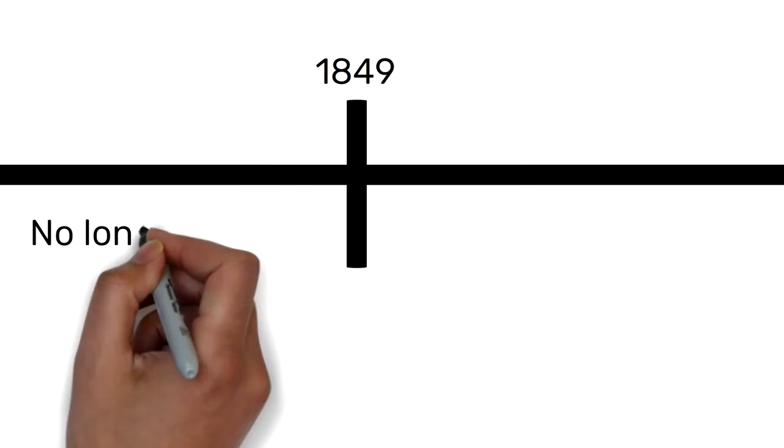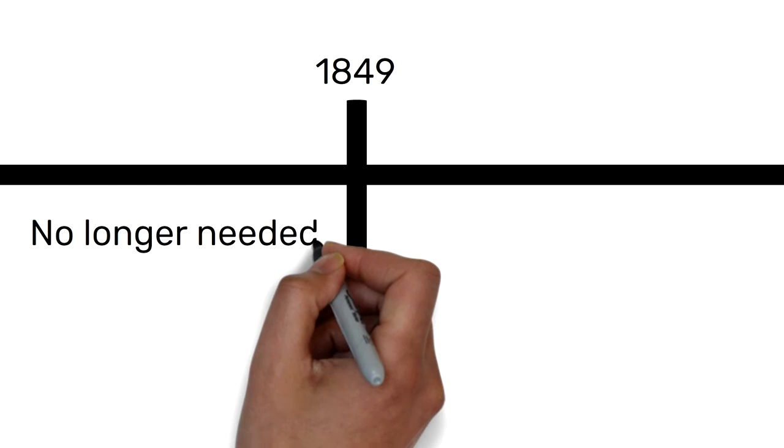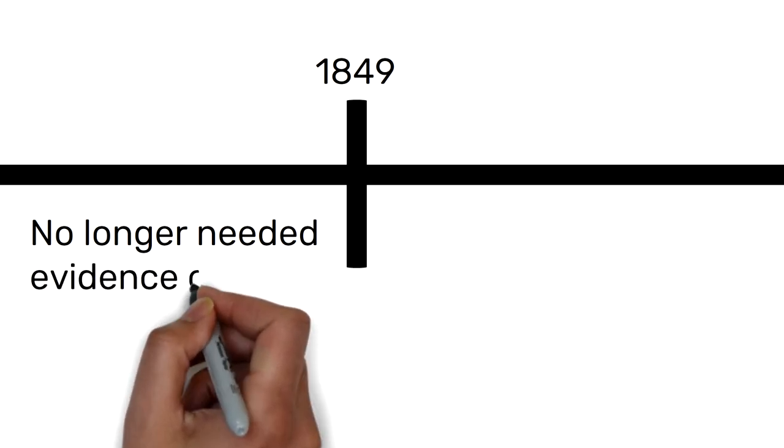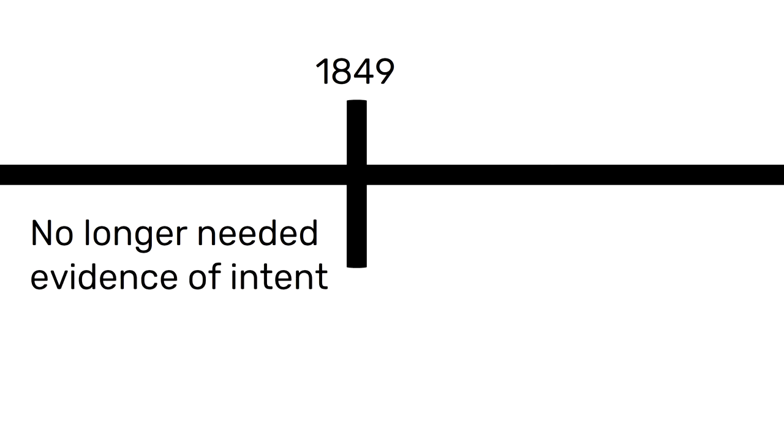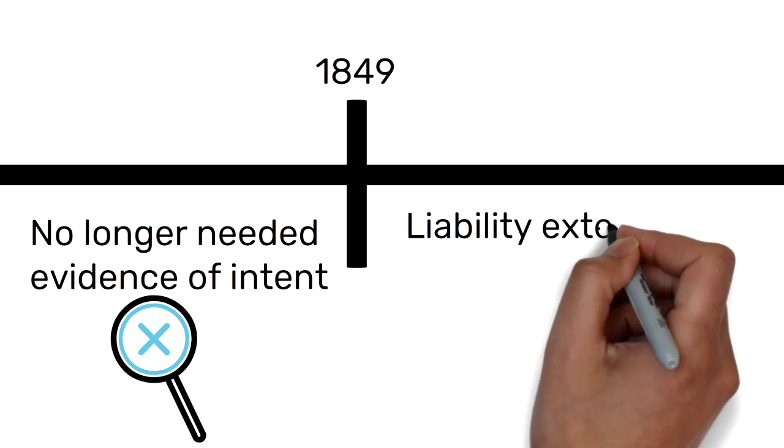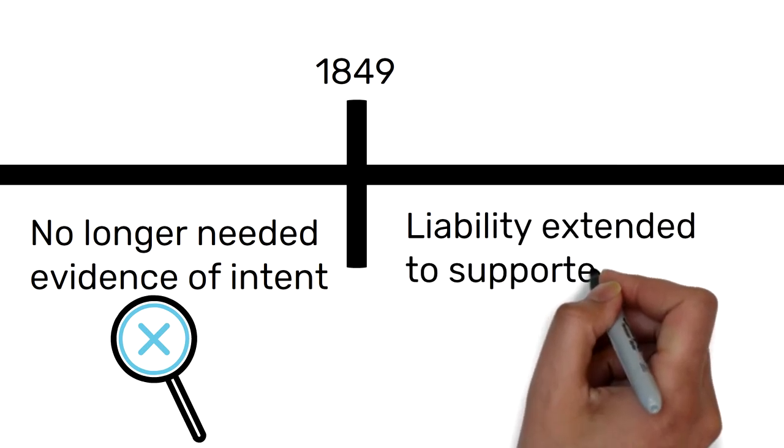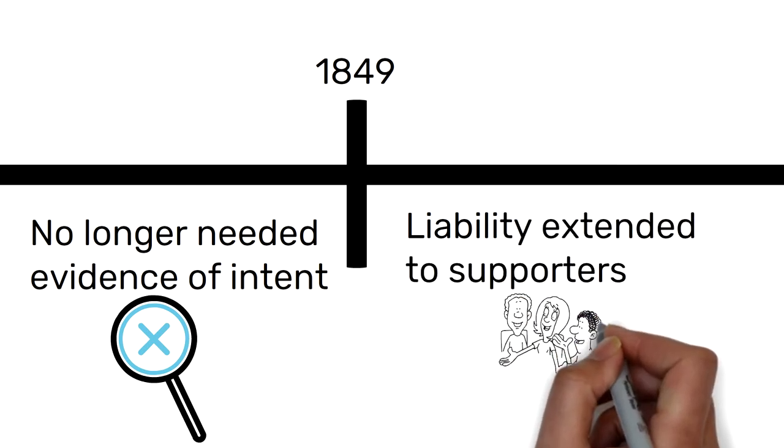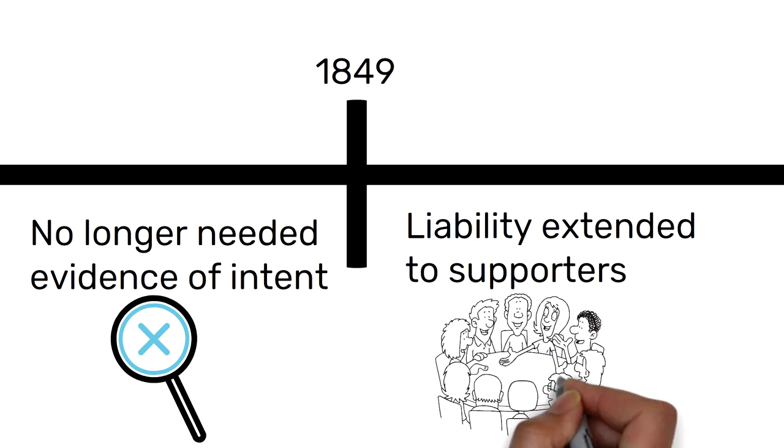In 1849, there were two more criteria to cover any loopholes that existed in previous laws. Firstly, there no longer needed to be established that the defendant had acted cruelly. They did not need evidence of intention in order to prosecute. Secondly, liability was extended beyond those who actually committed the offence. It was also extended to supporters.